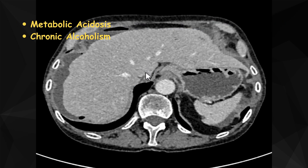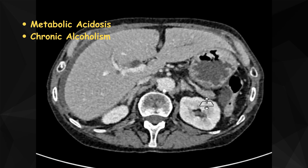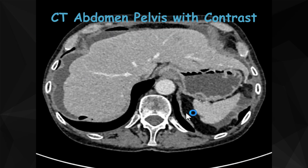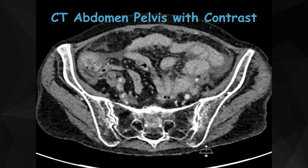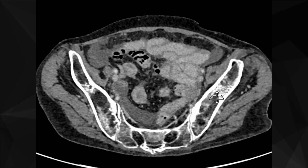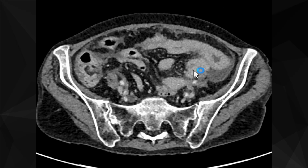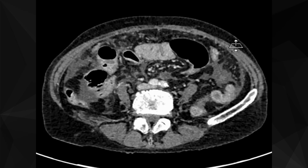metabolic acidosis on the background of chronic alcoholism. A CT scan of the abdomen and pelvis was performed with portal venous contrast. On this scan, you can see some free fluid around the liver. There is further free fluid in the central abdomen and also some in the pelvis. Look at the bowel loops.